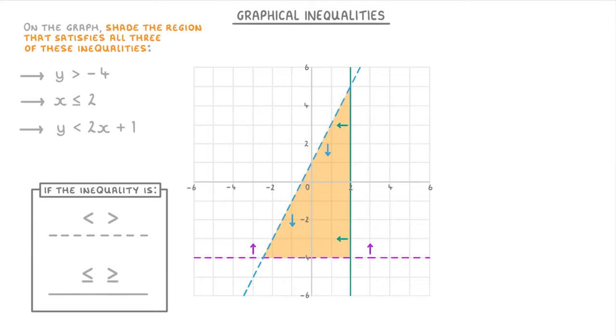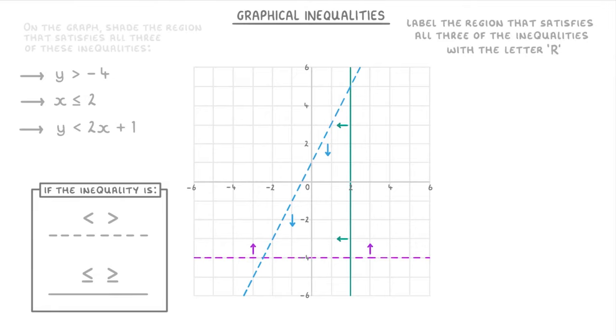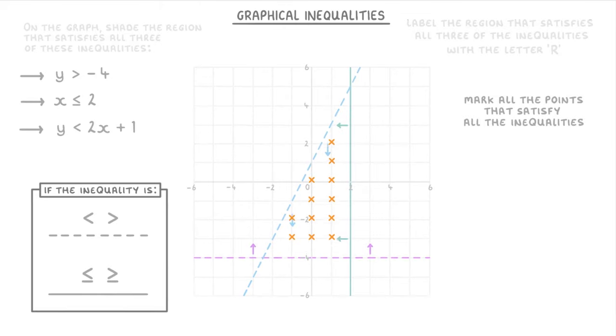Something else to point out is that instead of being asked to shade the region, you might sometimes be asked to label the region in some way. For example, label the region that satisfies all three of the inequalities with the letter R. So in that case you'll just put a big R in there. Alternatively, you could be asked to mark all of the points that satisfy all the inequalities, so for that you'd have to put little crosses on all of the points inside the area. Importantly though, because x is less than or equal to 2, we also need to put crosses on these points because the x value can also be 2 itself.